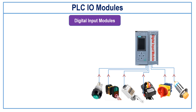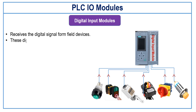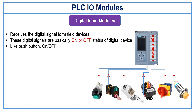Digital input module: The digital input module receives the digital signal from the field devices. These digital signals are basically the on or off status of digital devices like push-button, on-off switch, selector switch, limit switch, proximity switch, etc. These all devices are examples of digital input devices and they have to be connected on the digital input module.